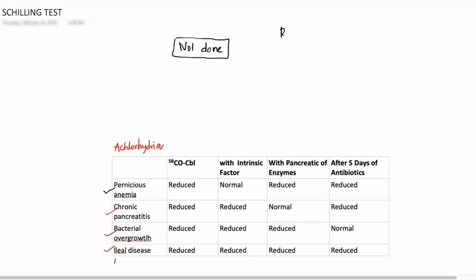In Schilling test, what are the requirements? You need to take oral, so this is how you give it oral, and there is one more variant IM, intramuscular. The cobalamin variant which is given orally is radioactive labeled with the help of cobalt. So radioactive labeled cobalamin, this is what we use. IM, we give normal cobalamin, 1 mg. These are the requirements.